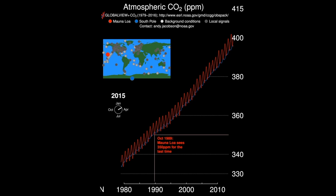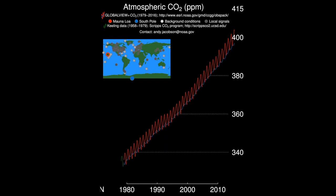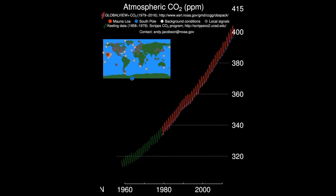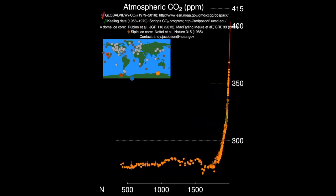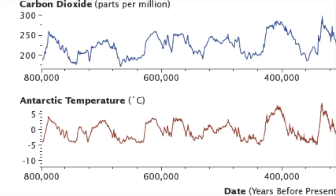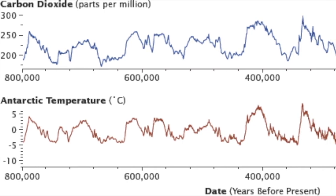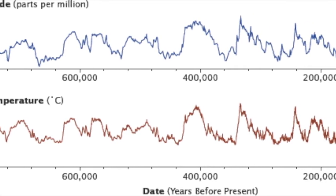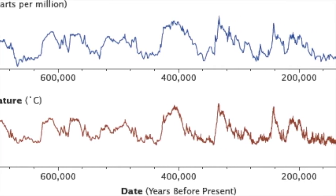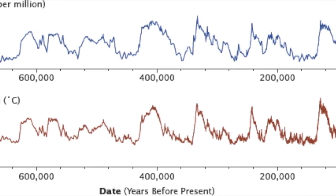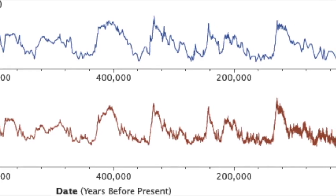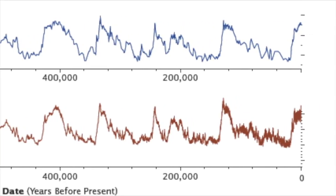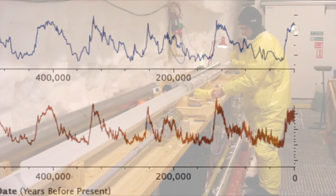Since 1950, carbon dioxide has been increasing rapidly, and measurements now have reached a new high above 400 parts per million. But why does this matter? It's because CO2 and temperature are directly related. As one increases, so does the other. A steady increase in carbon dioxide means a steady increase in average global temperature.